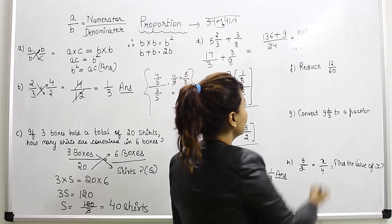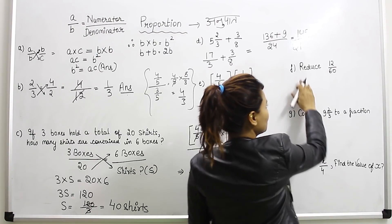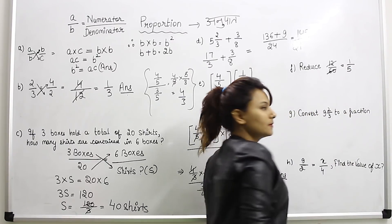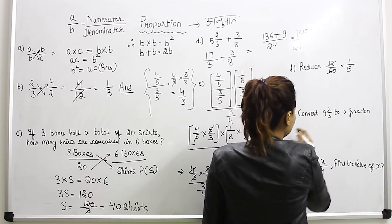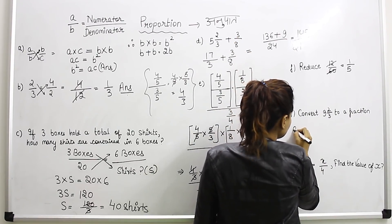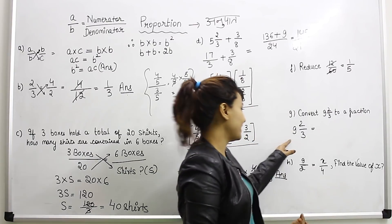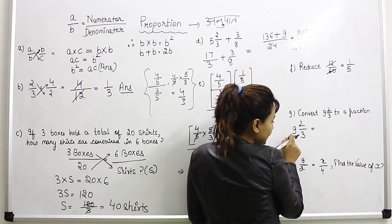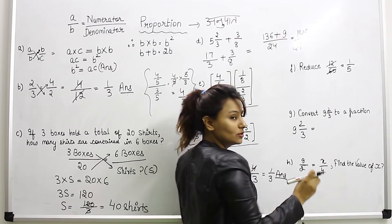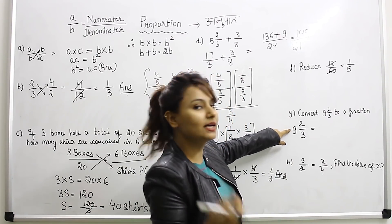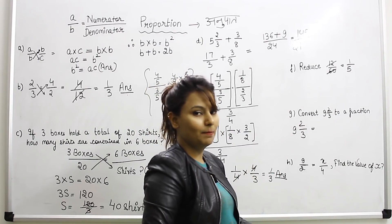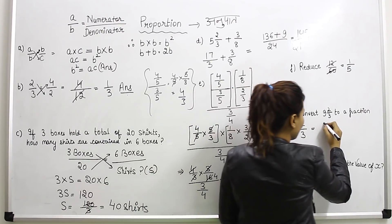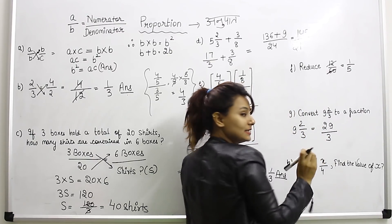Question number 6: simply reduce 12 by 16. We will reduce this fraction. Now we will tell you about the mixed number concept: 9 and 2 by 3. This is a fraction — a mixed fraction. To convert it: the denominator stays the same. 9 times 3 equals 27, plus 2 equals 29. So the answer is 29 by 3.